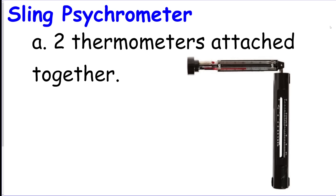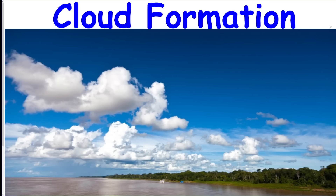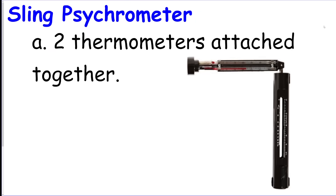The sling psychrometer is the instrument used to measure air temperature, dew point, and relative humidity. It uses a wet bulb and dry bulb, and you use the chart on the reference table. Be familiar with how to get dew point and relative humidity from the reference table.